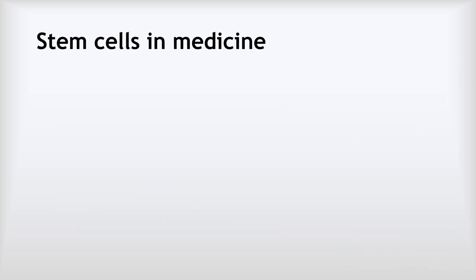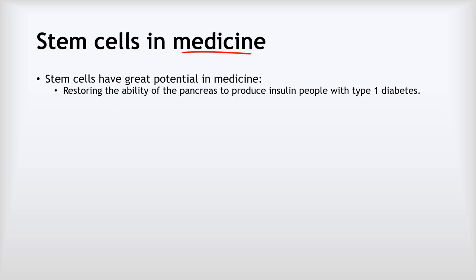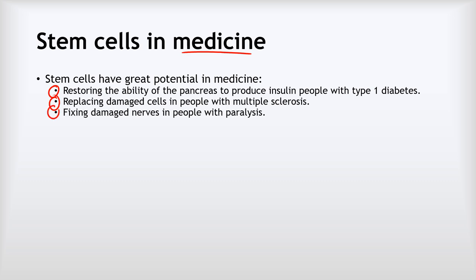Given their ability to differentiate, stem cells have huge potential applications in medicine. We might restore the pancreas's ability to make insulin in people with type 1 diabetes, replace damaged cells in people with multiple sclerosis, fix damaged nerves in paralyzed people, or even grow entire replacement organs for transplant. For example, stem cells could potentially grow a new heart with all its different cell types.